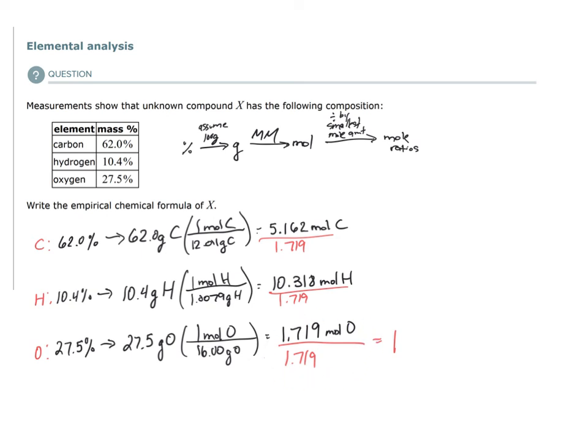So 10.318 divided by 1.719, this is equal to 6.00. 5.162 divided by 1.719 is equal to 3.00. These mole ratios are always going to be very, very, very close to one number. And in this case, they're very close to 3.